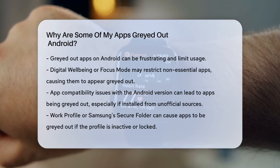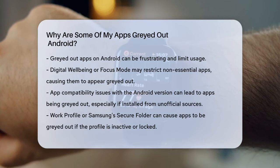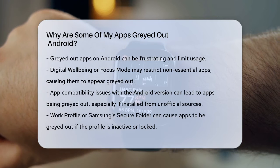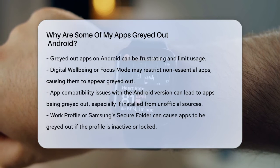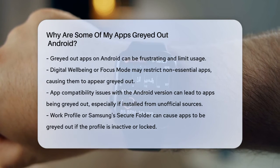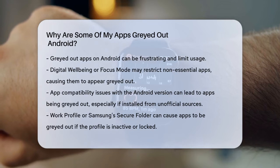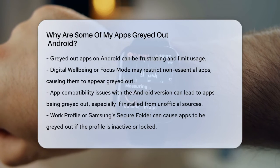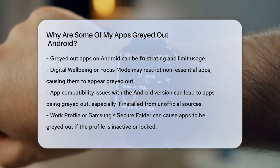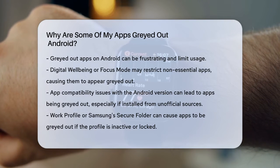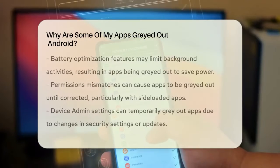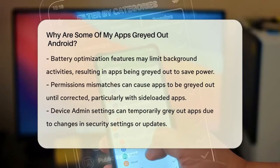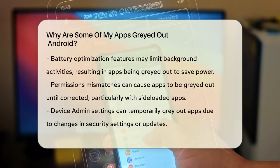Another possibility is that the app is not compatible with your Android version. If you've installed an app from an unofficial source, it might not work properly with your device's operating system. Android may gray out these apps to protect your device from potential security risks.